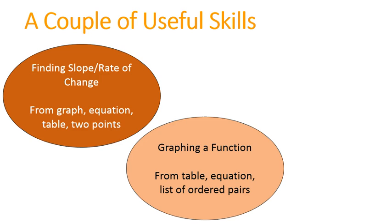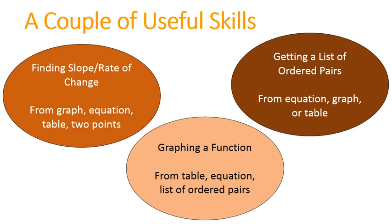We need to be able to graph a function if we're given a table, equation, or a list of ordered pairs. And we also need to know how to get a list of ordered pairs if we're given a graph, a table, or an equation. These skills are mainly going to be shown in the sample questions, but I am going to do one thing first. I am going to talk about slope, or the rate of change, because it is very important that we understand how to do that. So I'm going to show how to find slope when you're given a graph, equation, or a table.